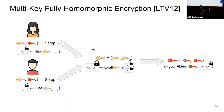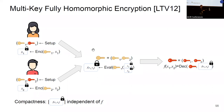Decryption requires both secret keys from Alice and Bob. The idea, similar to the combiner case, is to use this primitive to move computation outside the MPC protocol. We require a succinctness property called compactness: the resulting ciphertext after evaluation is independent of function f.